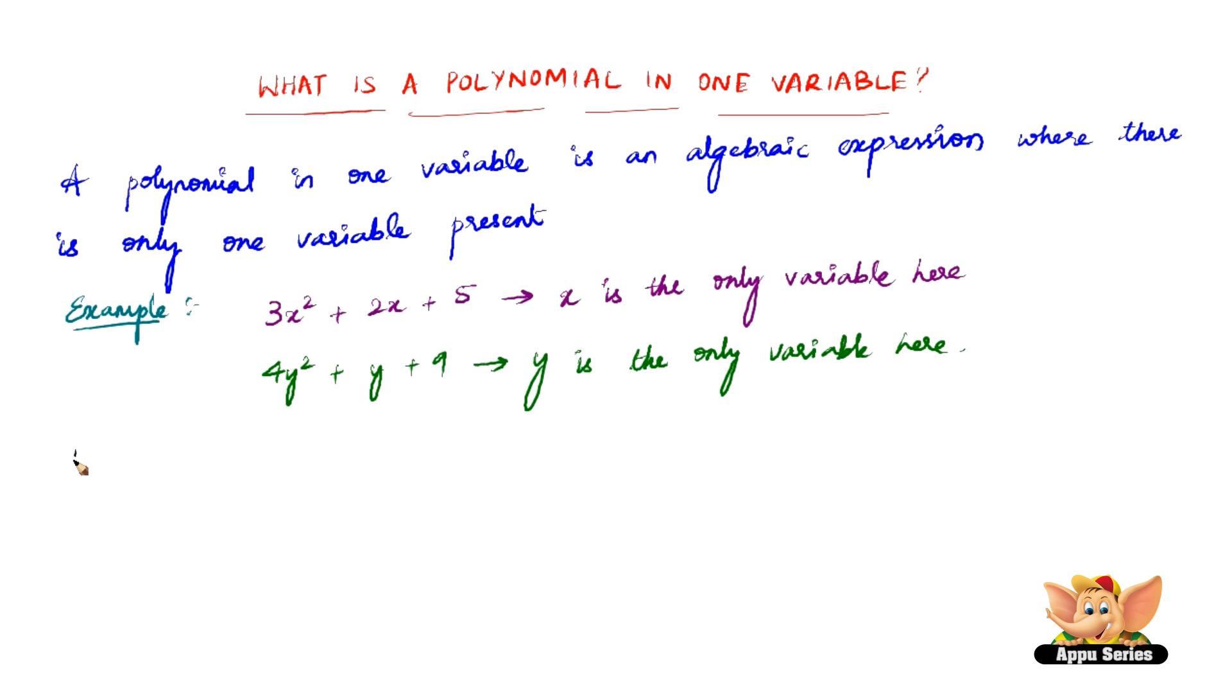Now to understand this concept better, let us see what is not a polynomial in one variable. A polynomial with more than one variable is not a polynomial in one variable.